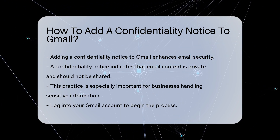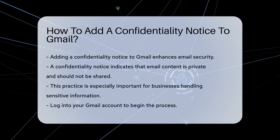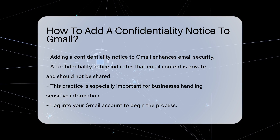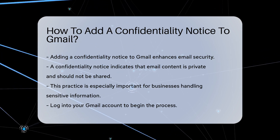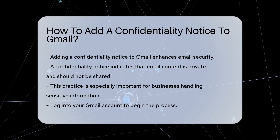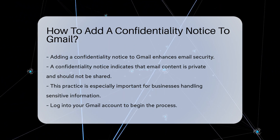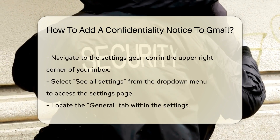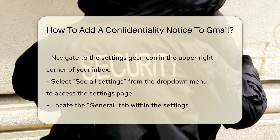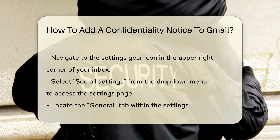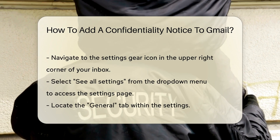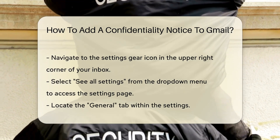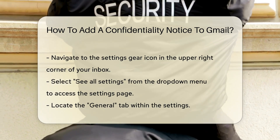To begin, log into your Gmail account. Once you are in your inbox, navigate to the Settings gear icon located in the upper right corner. Click on this icon and select See All Settings from the drop-down menu. This will take you to the Settings page where various options can be customized.